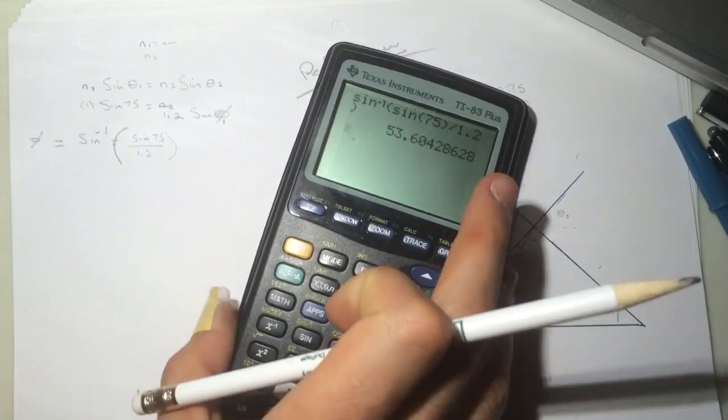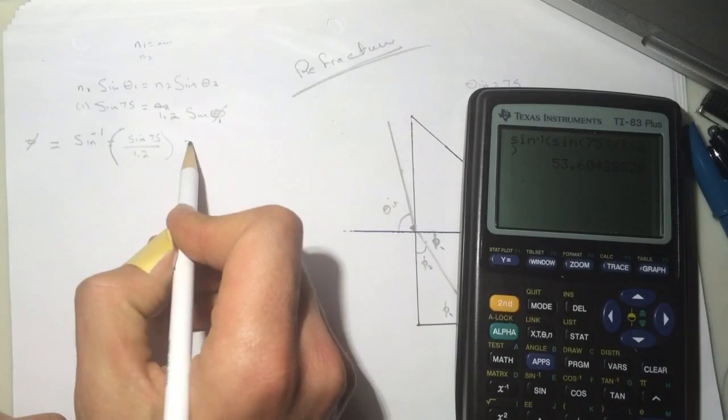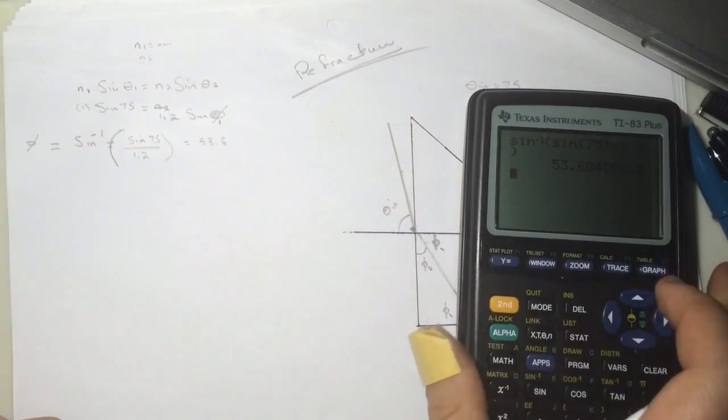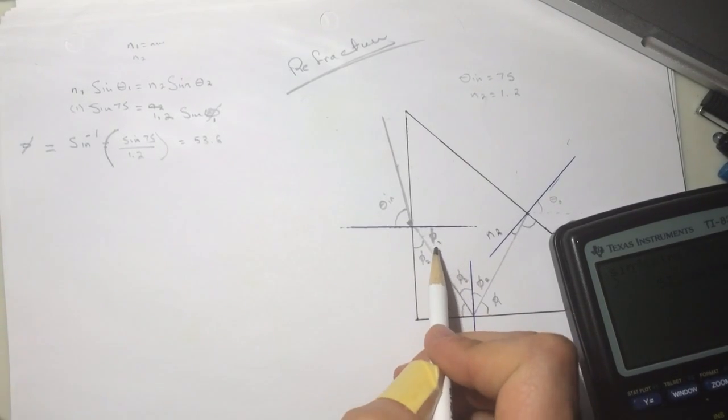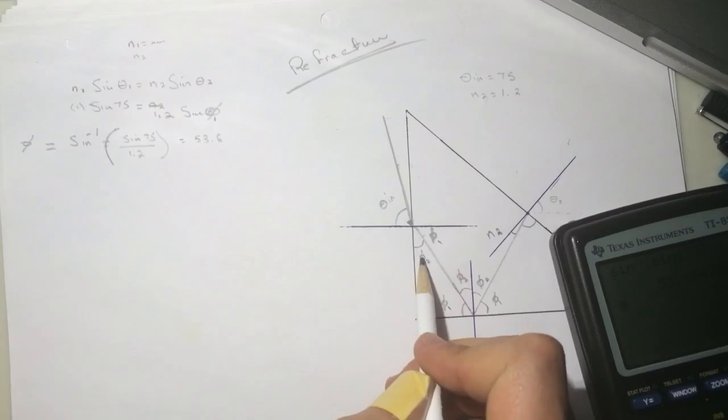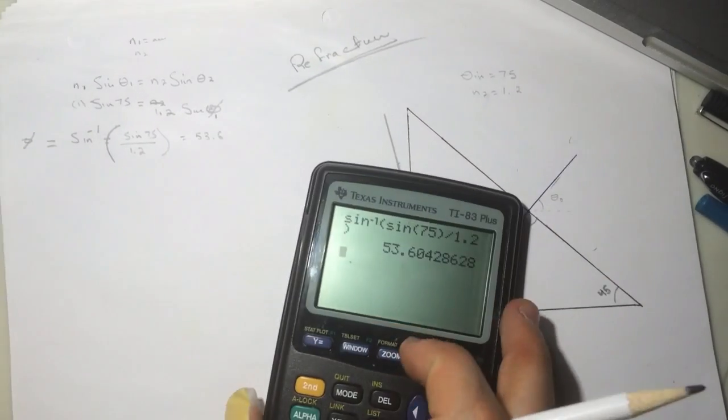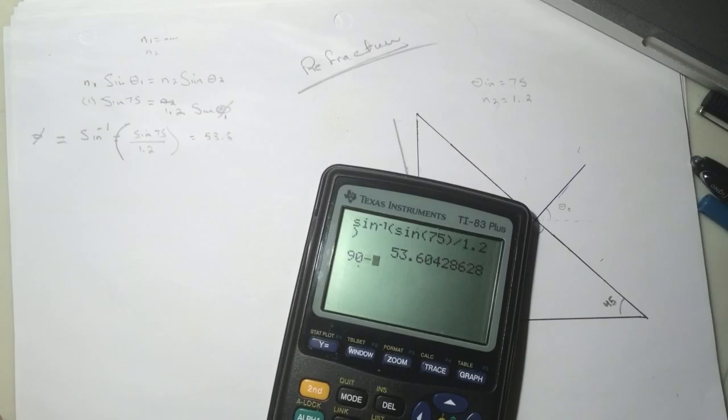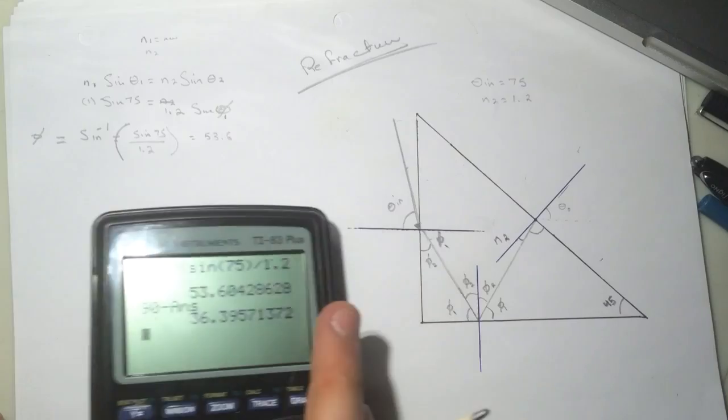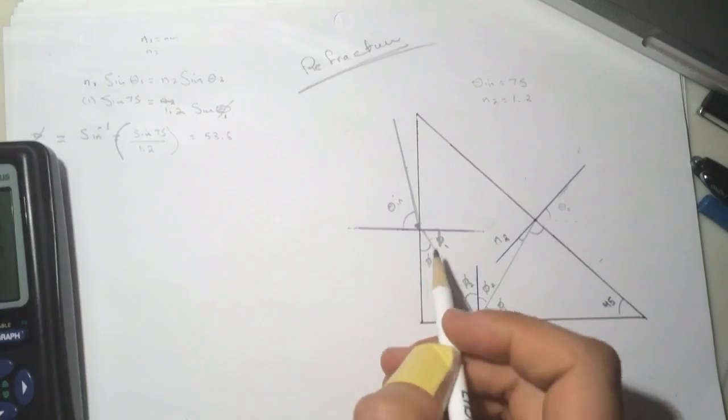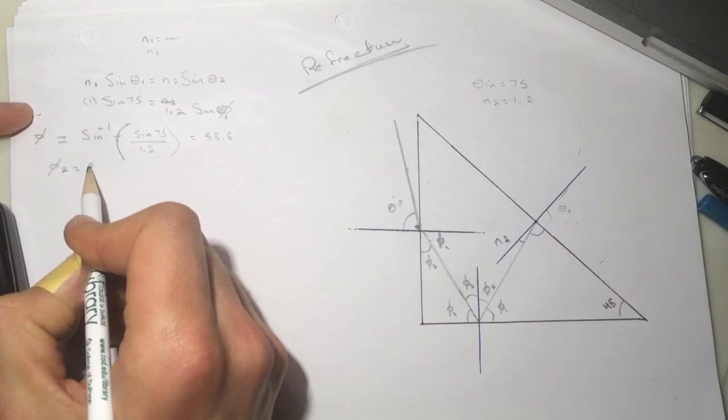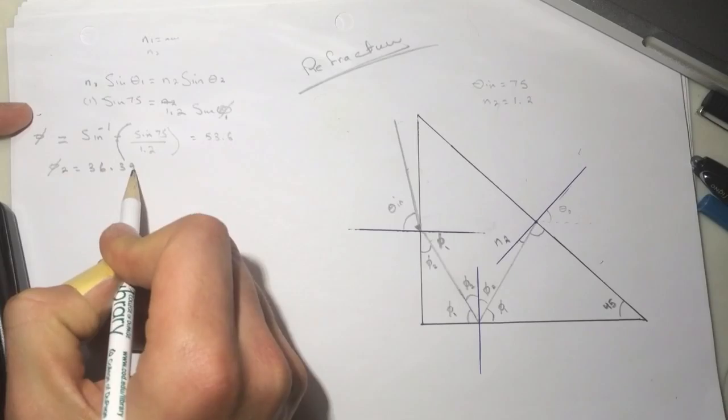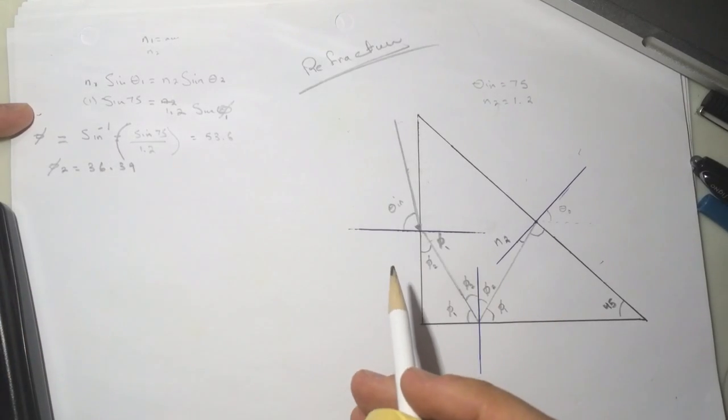So it's 53.6. 53.6 is the phi here. To find this guy, 90 minus your answer, you'll get 36.39. So I call this phi 2, so phi 2 is 36.39.